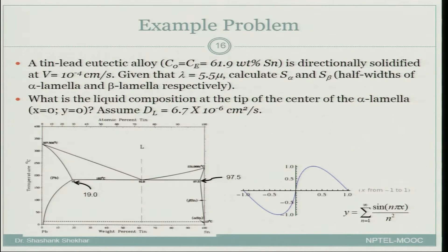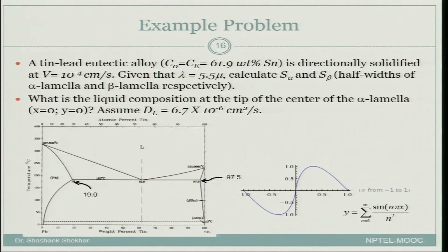The example problem is about a tin-lead eutectic alloy. C naught equals C_e, which in terms of weight percent tin is equal to 61.9 weight percent. It is directionally solidified at V equal to 10⁻⁴ centimeter per second. Lambda is given as 5.5 micrometers, where lambda equals 2(s_alpha + s_beta). We need to calculate s_alpha and s_beta, and also the liquid composition at the tip of the center of the alpha lamella at x=0, y=0.